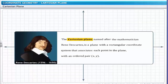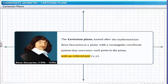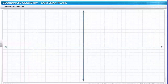The Cartesian plane, named after the mathematician René Descartes, is a plane with a rectangular coordinate system that associates each point in the plane with an ordered pair (x, y). The Cartesian plane is often used in graphical representation of figures.